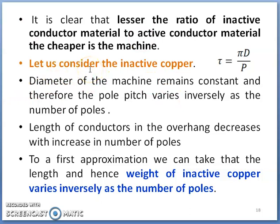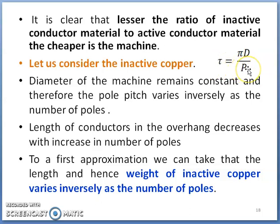Considering the effect of inactive copper: since the diameter of the machine remains constant, the pole pitch varies inversely as the number of poles, as per the equation τ = πD/P. If the diameter of the machine is kept constant, then pole pitch depends upon number of poles and these are inversely related. The length of conductor in the overhang decreases with increase in number of poles. Because of this, the weight of inactive copper varies inversely as the number of poles — as the length of inactive copper decreases due to increase in number of poles, the weight of inactive copper will be less for a large number of poles.